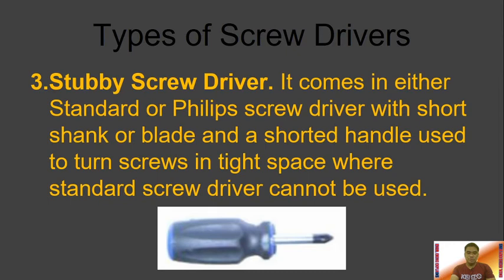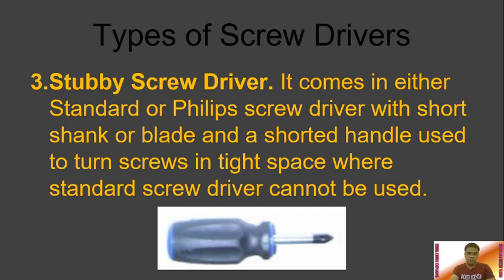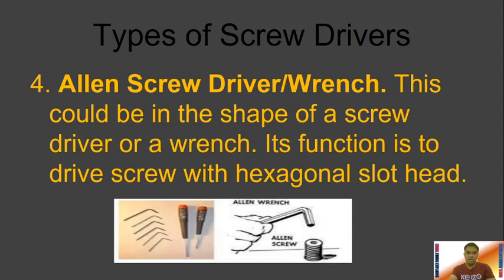Then we have the stubby screwdriver. It has a shorter shank — it comes in standard or Phillips type with a short blade and a shortened handle, used to turn screws in tight spaces where a standard screwdriver cannot be used. Then we have the Allen wrench, which can be in the shape of a screwdriver or a wrench. Its function is to drive screws with a hexagonal slot head.